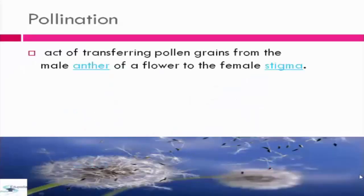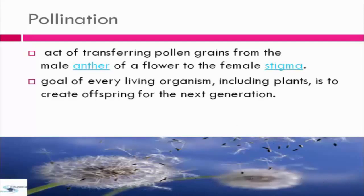Again, pollination is the act of transferring pollen grains from the male's stamen of a flower to the female's stigma. And the usual goal of every living organism, especially plants, is to create offspring for the next generation.